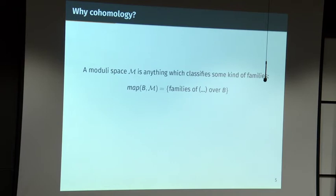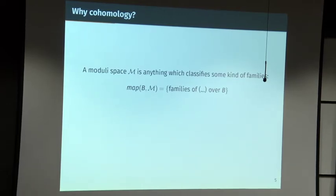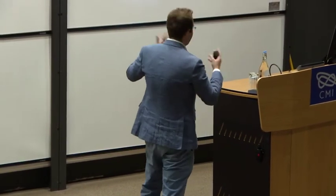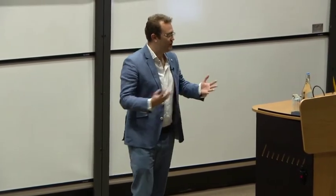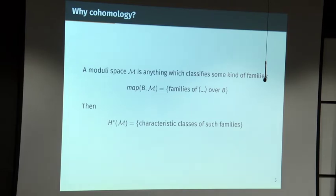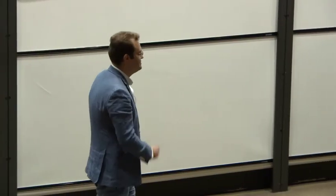Why cohomology of moduli spaces in particular? Cohomology has a distinguished meaning: a moduli space classifies families of mathematical objects, so maps from B to M should correspond to families over B. By Yoneda's lemma, the cohomology of M is exactly the characteristic classes of that kind of family — all ways of assigning to every family over B a cohomology class, naturally under base change. That's why cohomology of moduli spaces is the correct thing to consider.